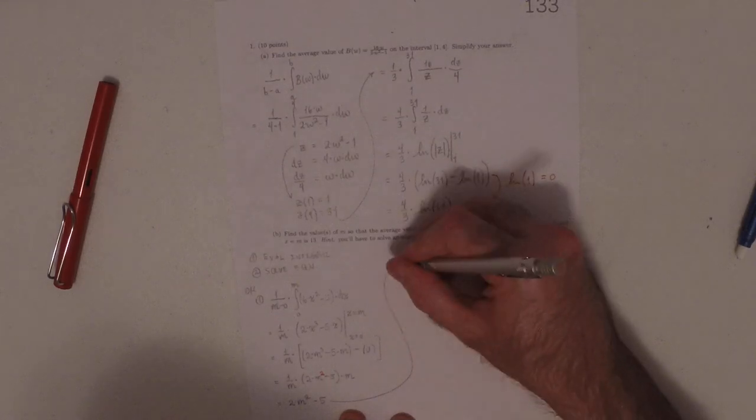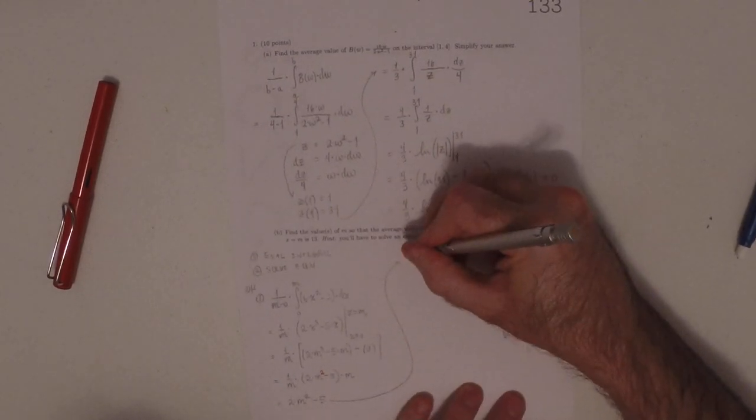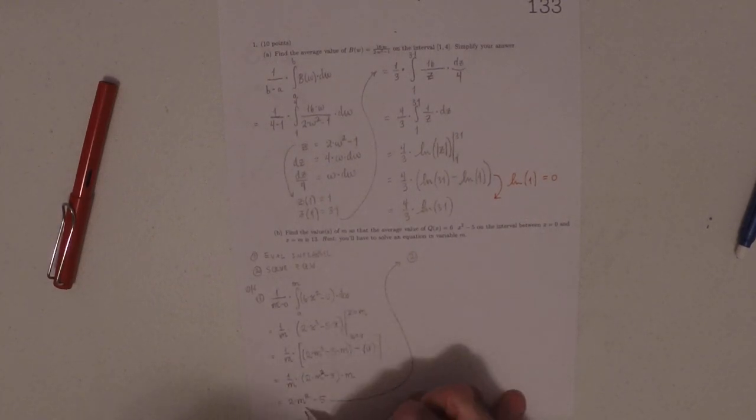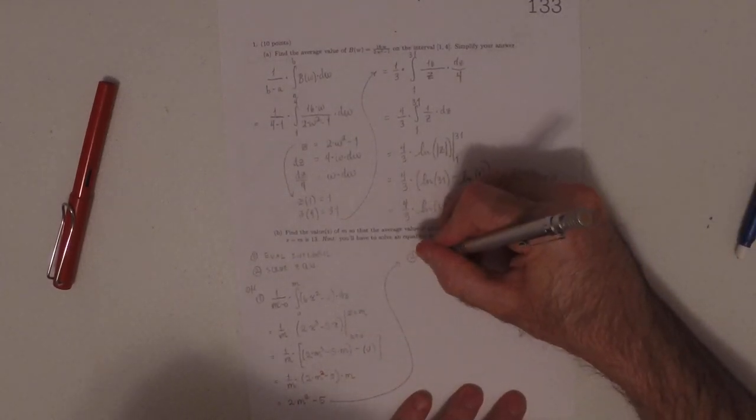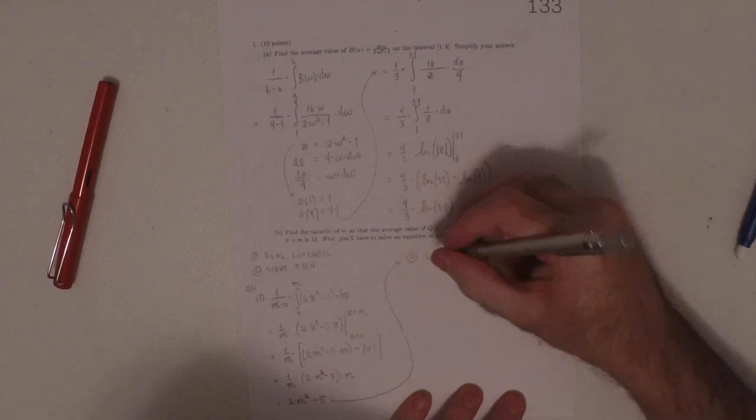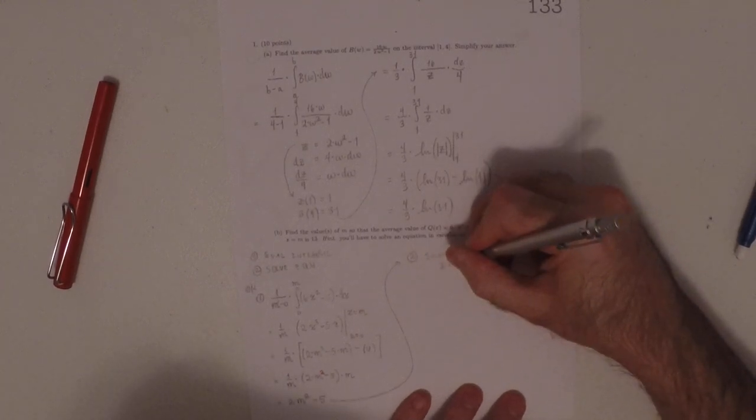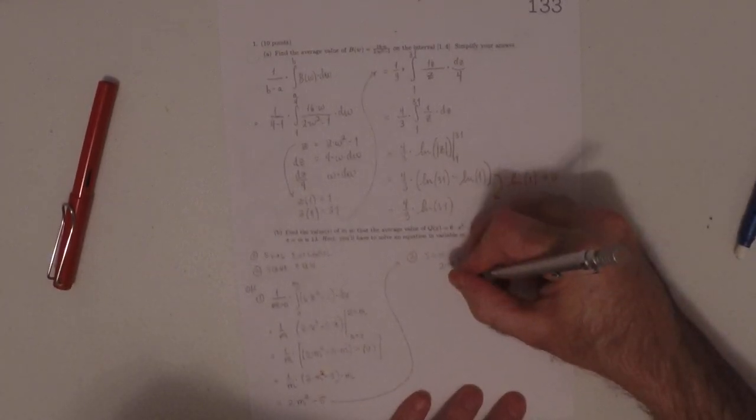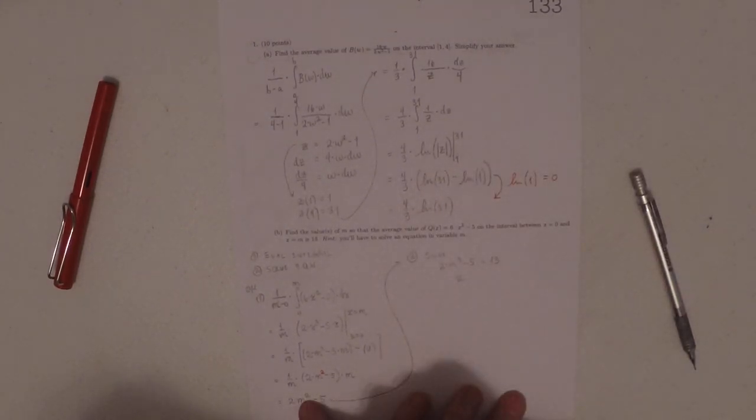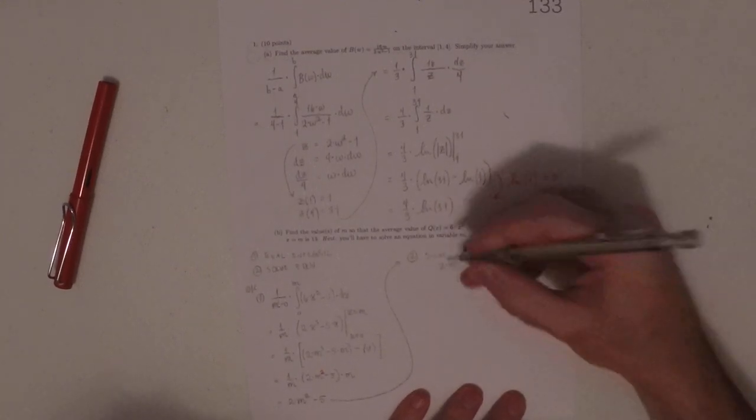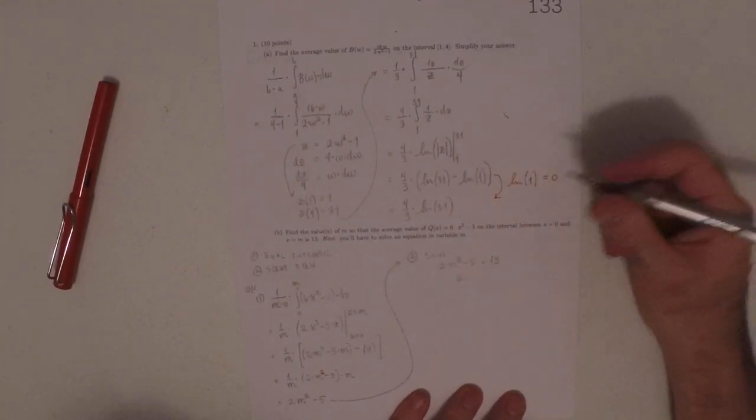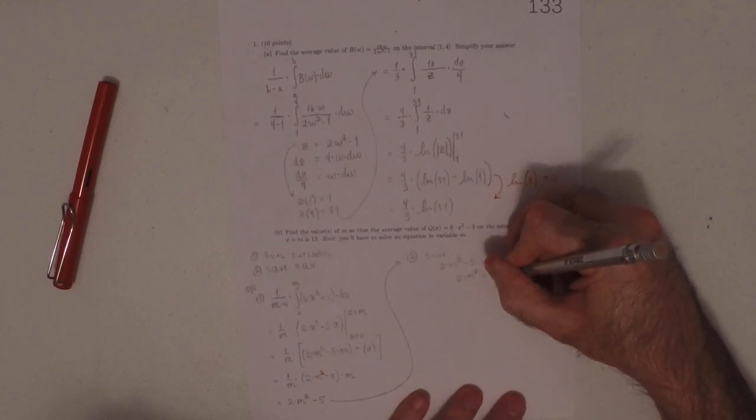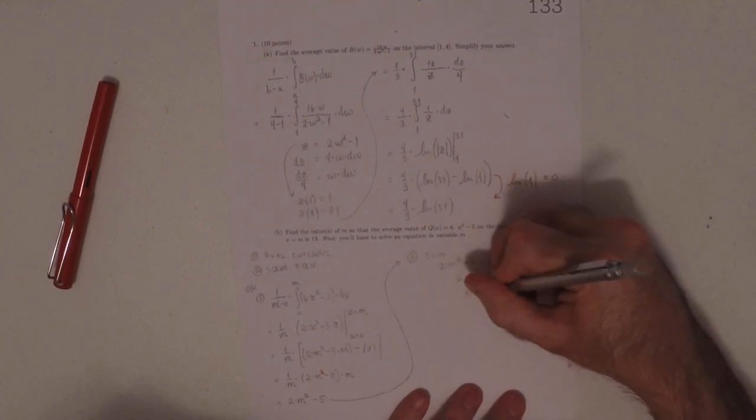And now the question is, which m's, if any, will give an average value of 13. So now what we want to do is solve 2m squared minus 5 equals 13. Well, if we add 5 to both sides... not 2m cubed, 2m squared. If we add 5 to both sides, we get 2m squared is 18.